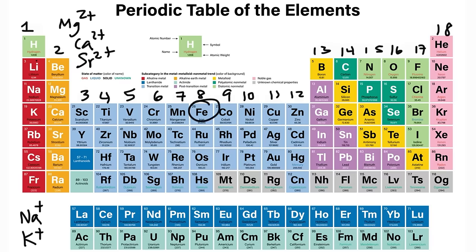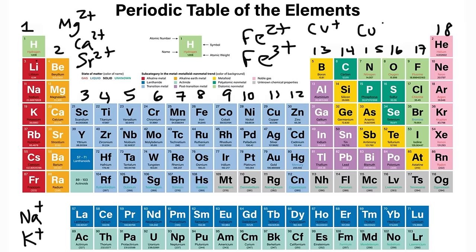The transition metals can form ions with variable charges. Iron, for instance, can form the 2+ ion or the 3+ ion. Copper has Cu⁺ and Cu²⁺. So the oxidation states — the charges that the transition metals can have — can vary widely.